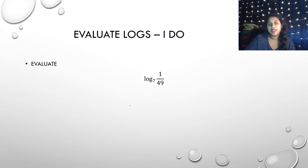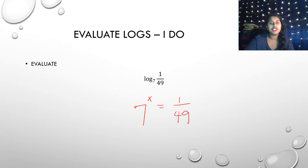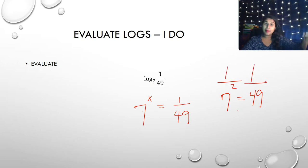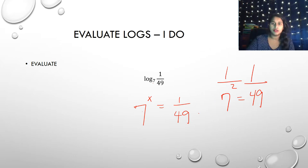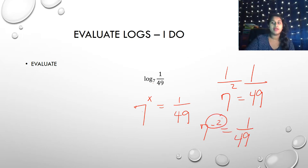Here's an even more complicated one. This says my base of 7 to some exponent equals 1 over 49. What's the relationship from 7 to 49? We know 7 squared equals 49, but how do I get 1 over? Flipping from numerator to denominator means a negative exponent. So 7 to the negative 2 equals 1 over 49. Therefore, y equals negative 2.